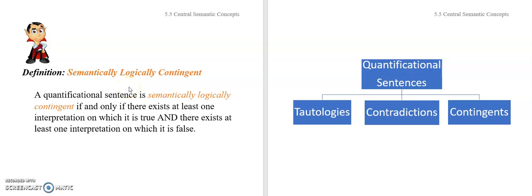This follows the exact same pattern from chapter two. A quantificational sentence is semantically logically contingent — remember chapter two — there has to be at least one row of its truth table where it's true, and at least one row where it's false. So it's contingent if and only if there exists at least one interpretation according to which it's true, and at least one interpretation according to which it's false.